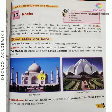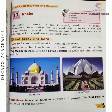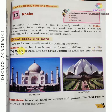Marble is a hard rock and is found in different colors. Many homes have marble flooring. Marble is found in many colors. The Taj Mahal in Agra and the Lotus Temple in Delhi are built of white marble.